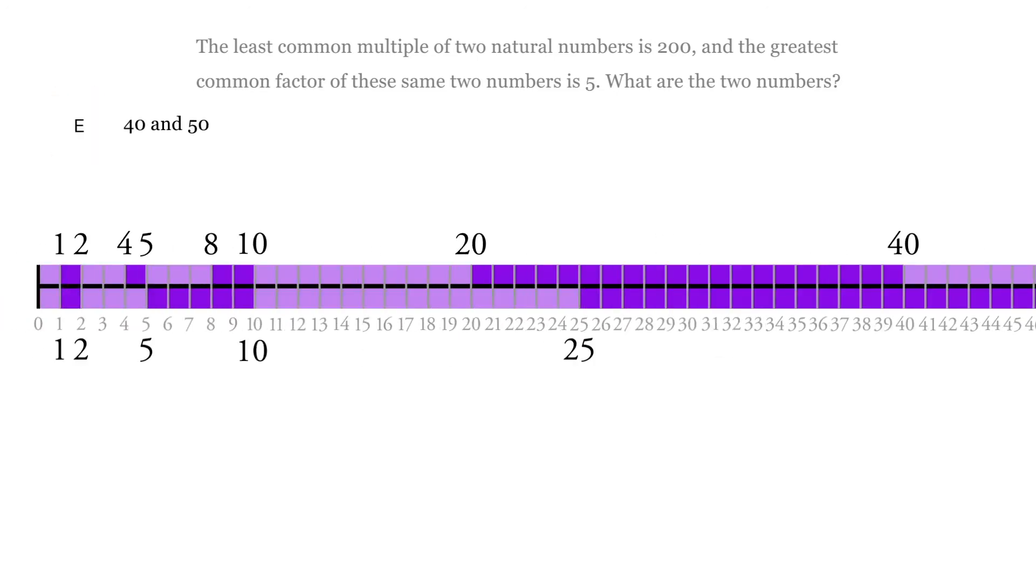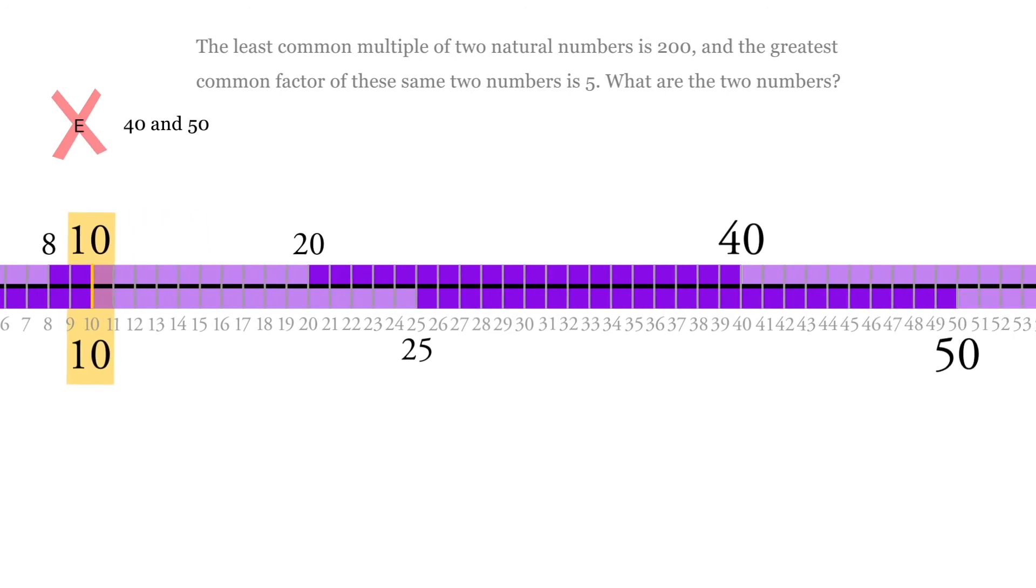Let's look at this one. Same kind of problem. 10 goes into both of these: 10 goes into 40 and 10 goes into 50. So 10 is the greatest common factor.